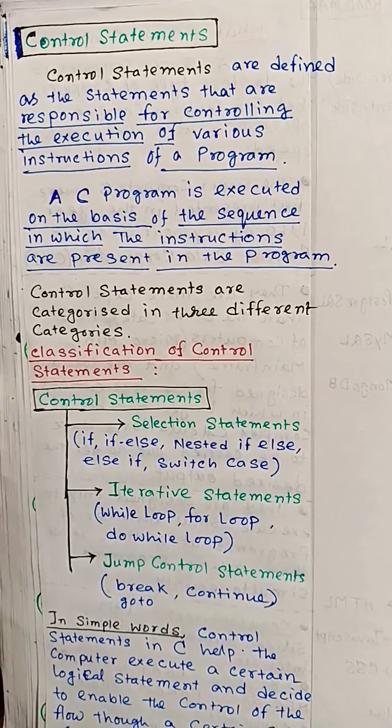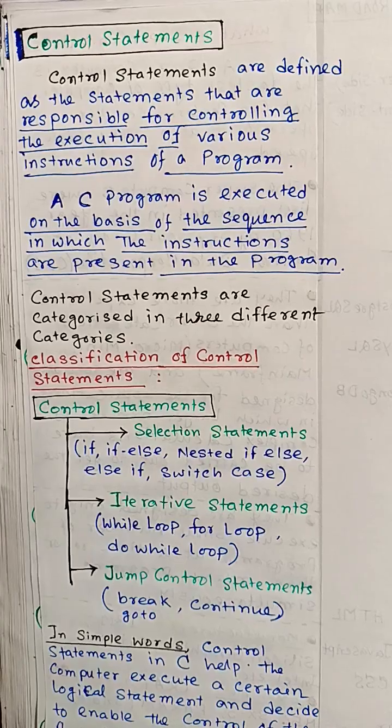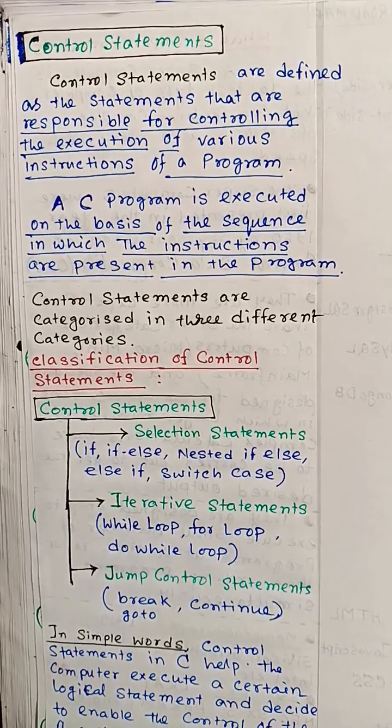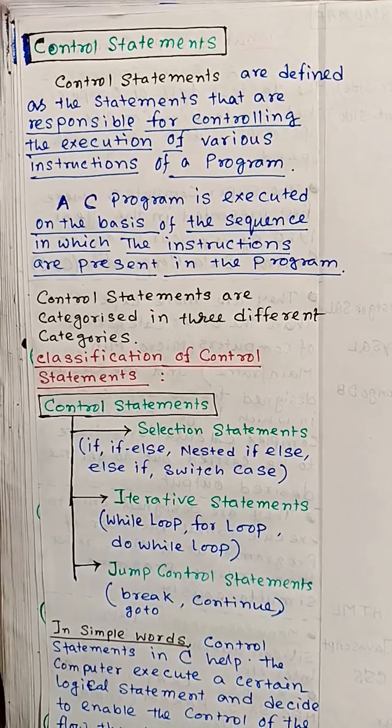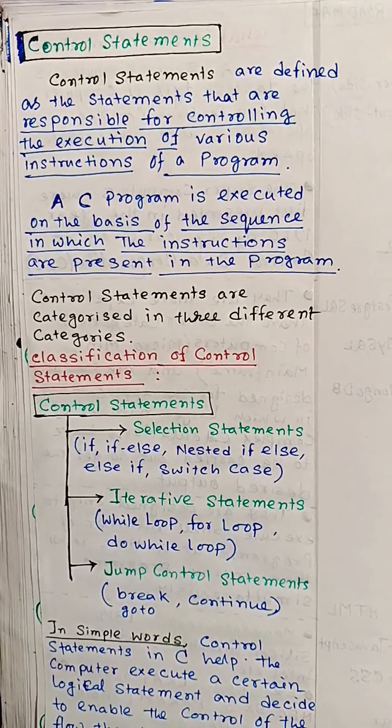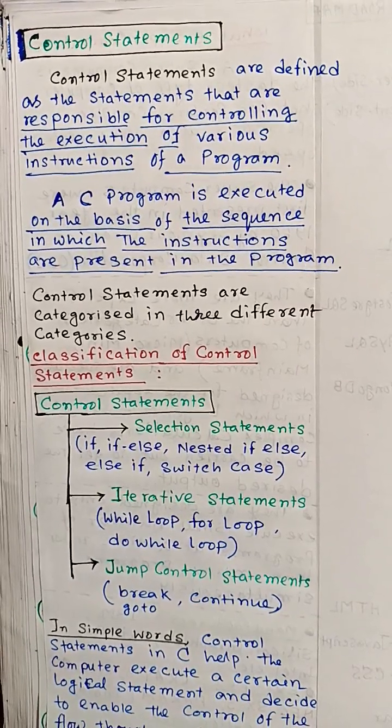Control statements are defined as the statements that are responsible for controlling the execution of various instructions of a program. A C program is executed on the basis of the sequence in which the instructions are present in the program.